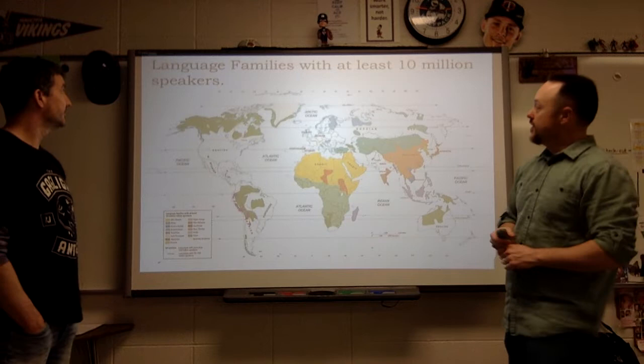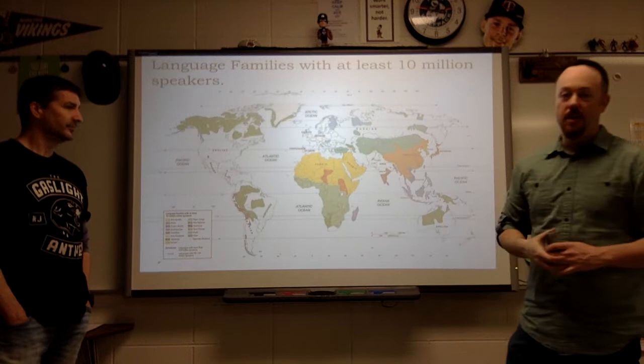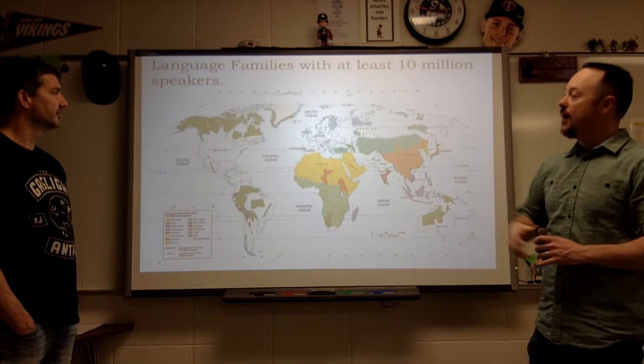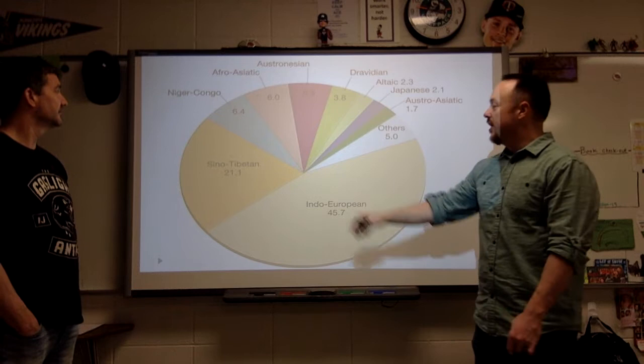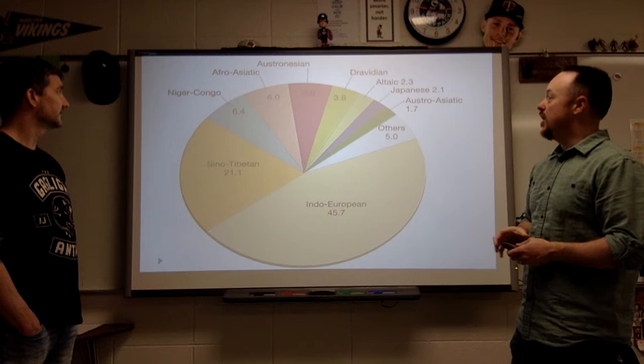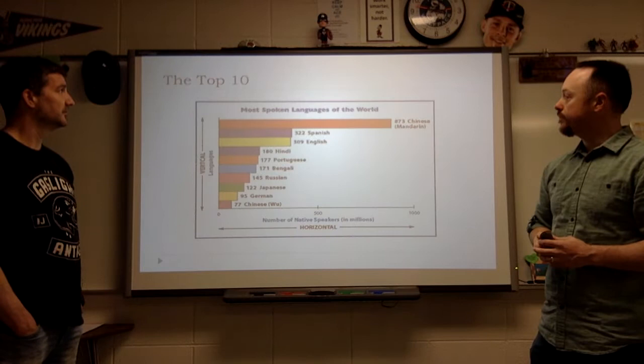Here are our language families — we're going to get way more into this. You can see all the different colors on the map. We've got Mandarin here as being your biggest one. We've got the Indo-European language family and the Sino-Tibetan language family — those are obviously your two biggest ones. We'll get into some of the others as well and look at the language trees.